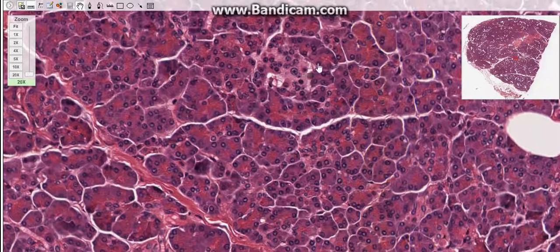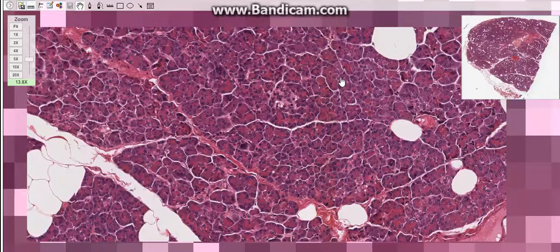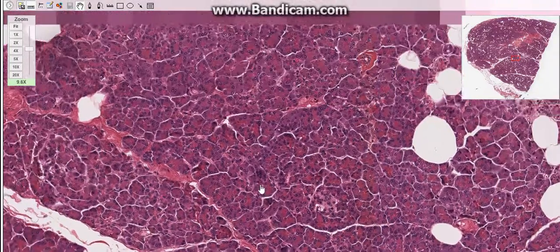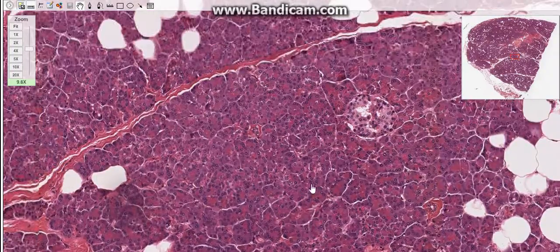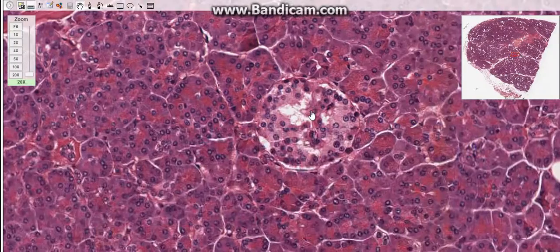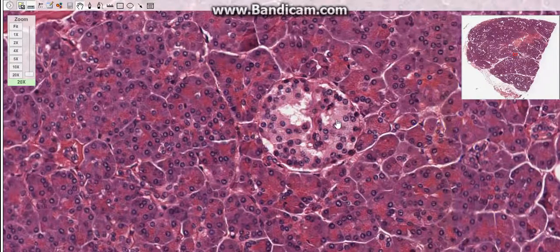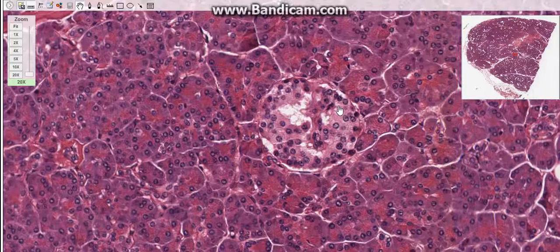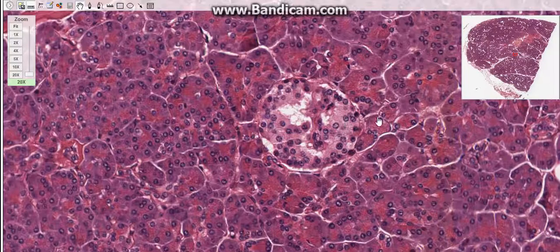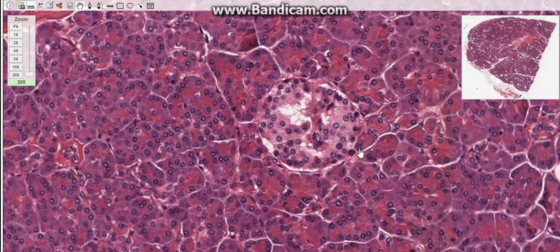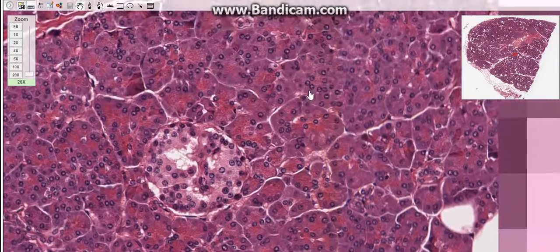Also there are the EC cells. They are the enterochromaffin cells. They secrete several peptides including motilin, secretin, and substance P. Motilin increases gastric and intestinal motility. Secretin stimulates bicarbonate secretion in pancreatic juice and pancreatic enzyme secretion.